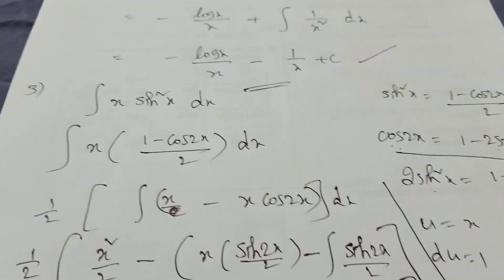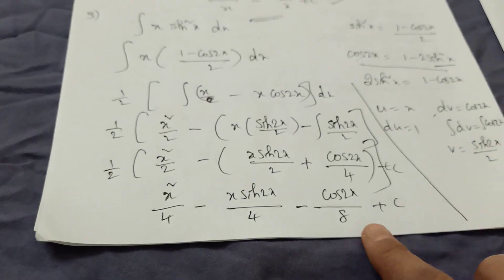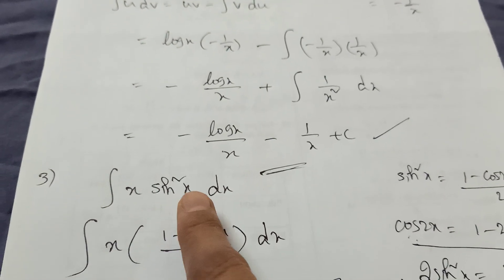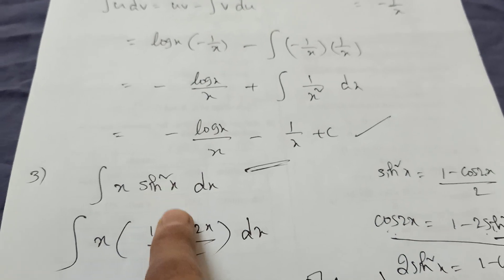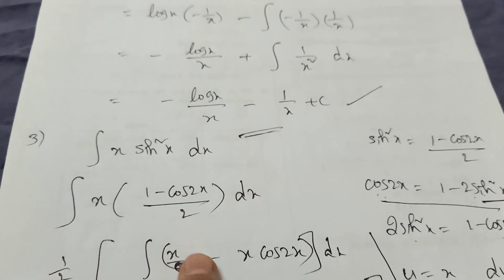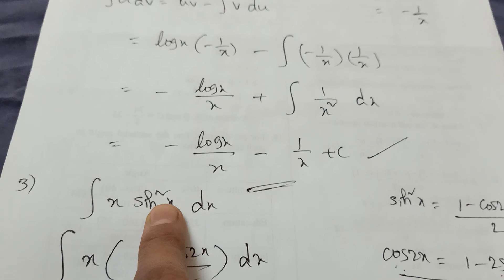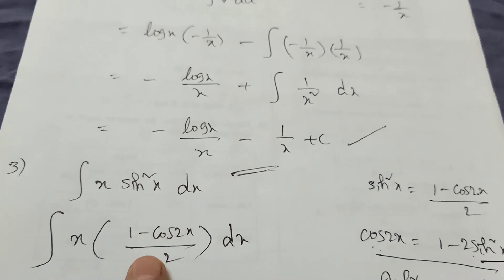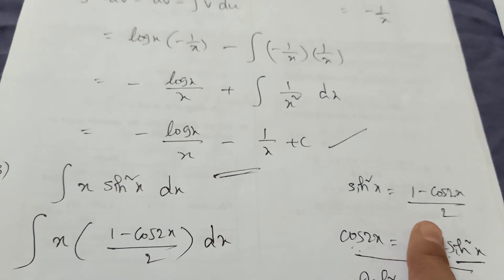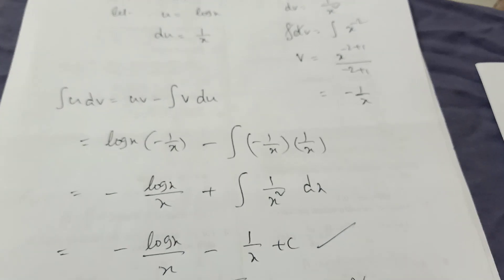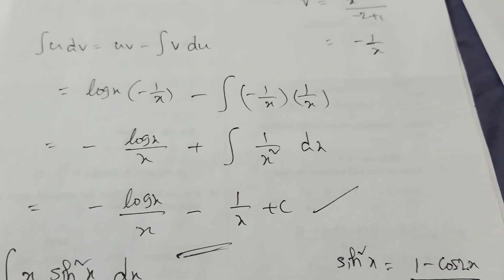This is the final answer. Got it — easy, no? Remember: if sin²x or cos²x appears, you must convert them using these formulas. For sin²x use (1 − cos2x)/2, and for cos²x use (1 + cos2x)/2. Daily watch my videos and you will get a good score. Thank you for watching my channel.